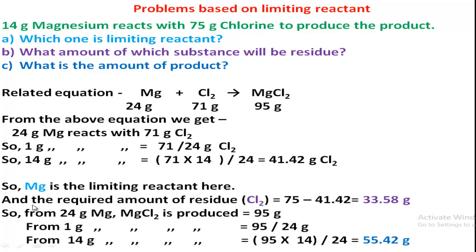Now we determine the amount of excess substance (residue). The required amount of residue of chlorine equals the given amount minus the used amount: 75 grams minus 41.42 grams equals 33.58 grams. This is the answer to the second question — what amount of which substance will remain unreacted.